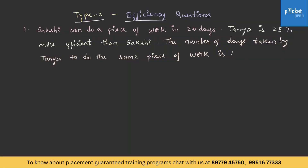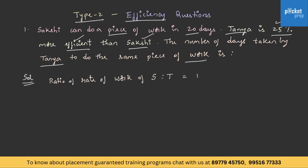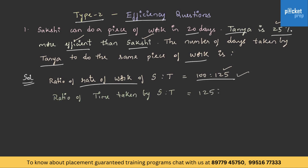Hope you have understood the concept, formulae and questions in this category. Let us understand questions related to efficiency. Sakshi can do a piece of work in 20 days. Tanya is 25% more efficient than Sakshi. The number of days taken by Tanya to do the same piece of work is. Since Tanya is 25% more efficient, the ratio of rate of work of Sakshi to Tanya will be 100 is to 125, and the ratio of time taken will be the reciprocal, 125 is to 100, which on solving gives 5 is to 4.